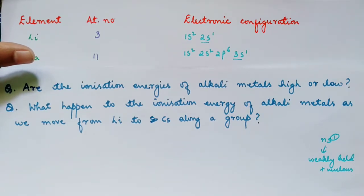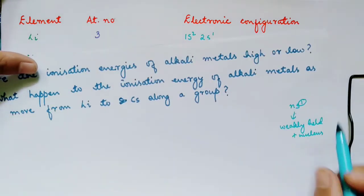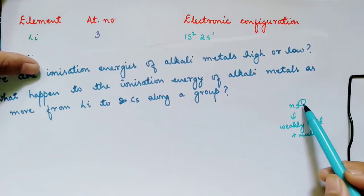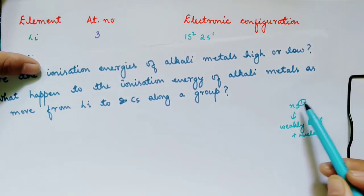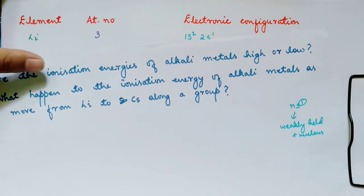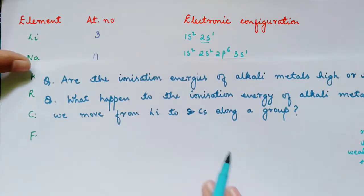And what is ionization energy? It is the amount of energy required to remove the loosely held electron from the valence shell.